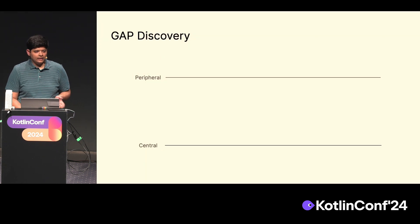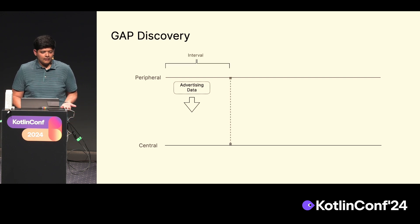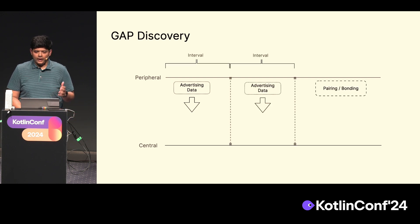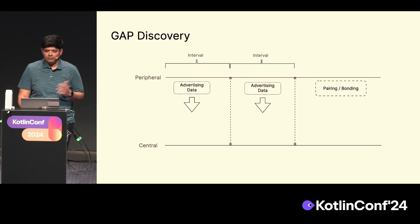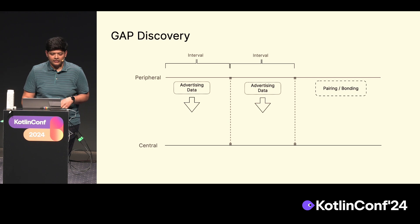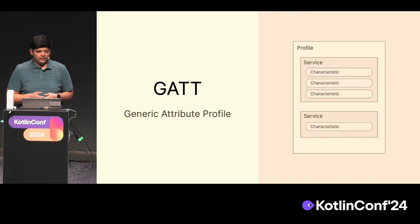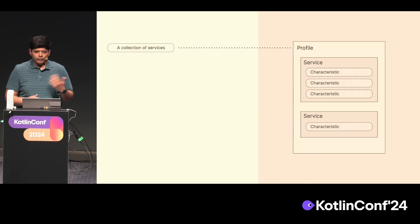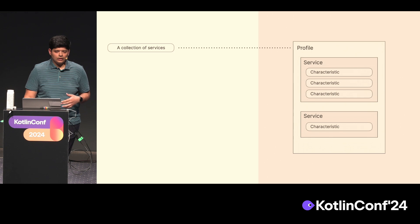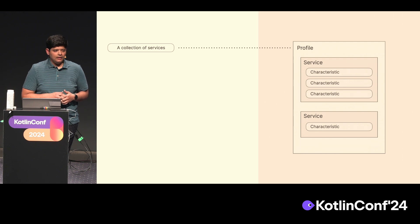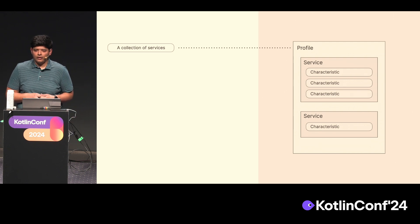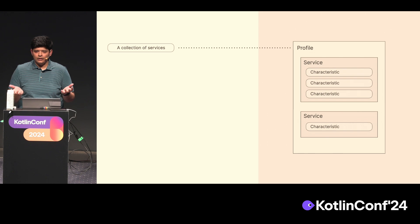A peripheral device broadcasts advertising data at a regular frequency. The central connects to it, and once pairing and bonding is complete, you no longer care about advertising packets. The Generic Attribute Profile is how you send commands and read and write data to the connected device. A profile is just a logical concept — imagine an API designed by committee, where instead of names they used 16-bit integers as lookup tables. That's essentially GATT in a nutshell.